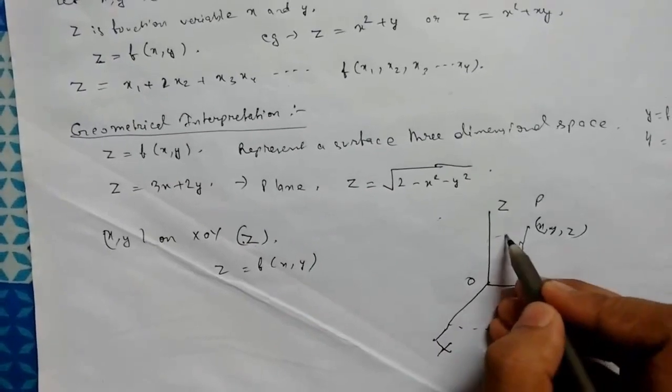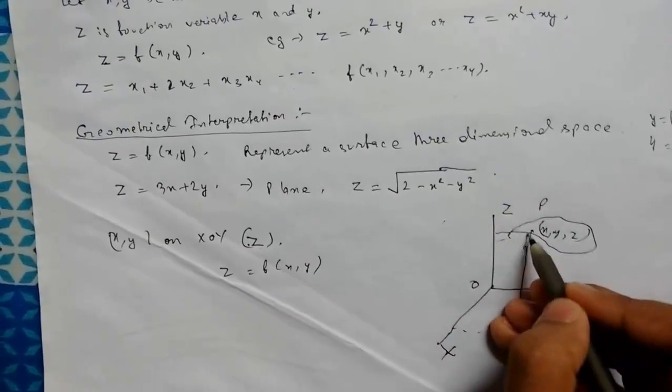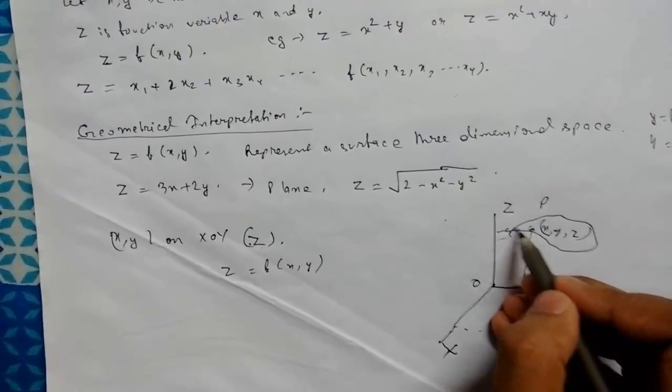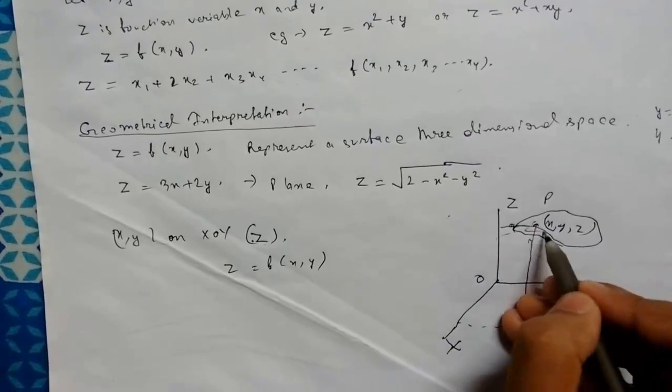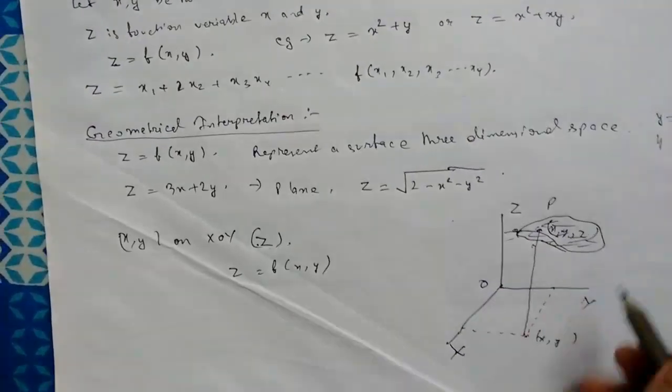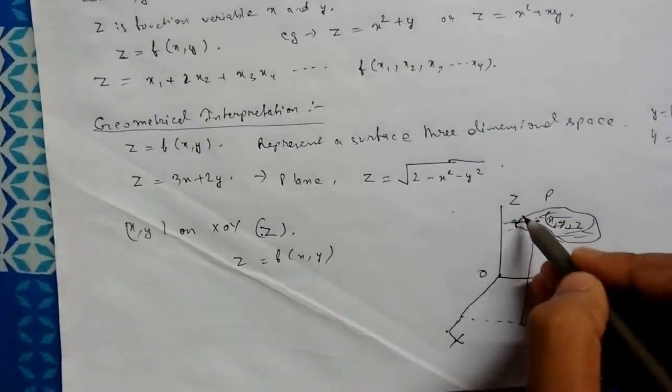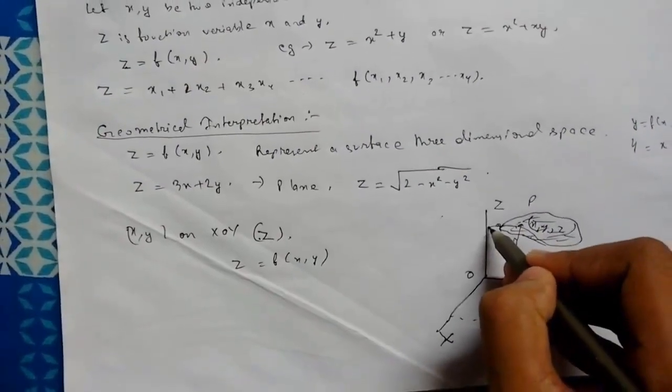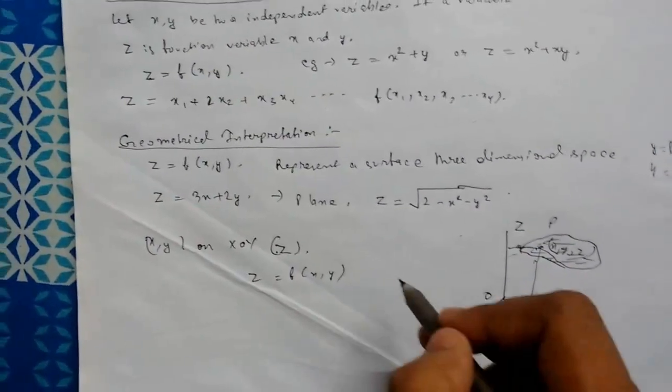So this can be any surface something like this, where this point must be interior point. Suppose this is our surface. So this will represent a surface. Corresponding value will give the z value of x comma y.